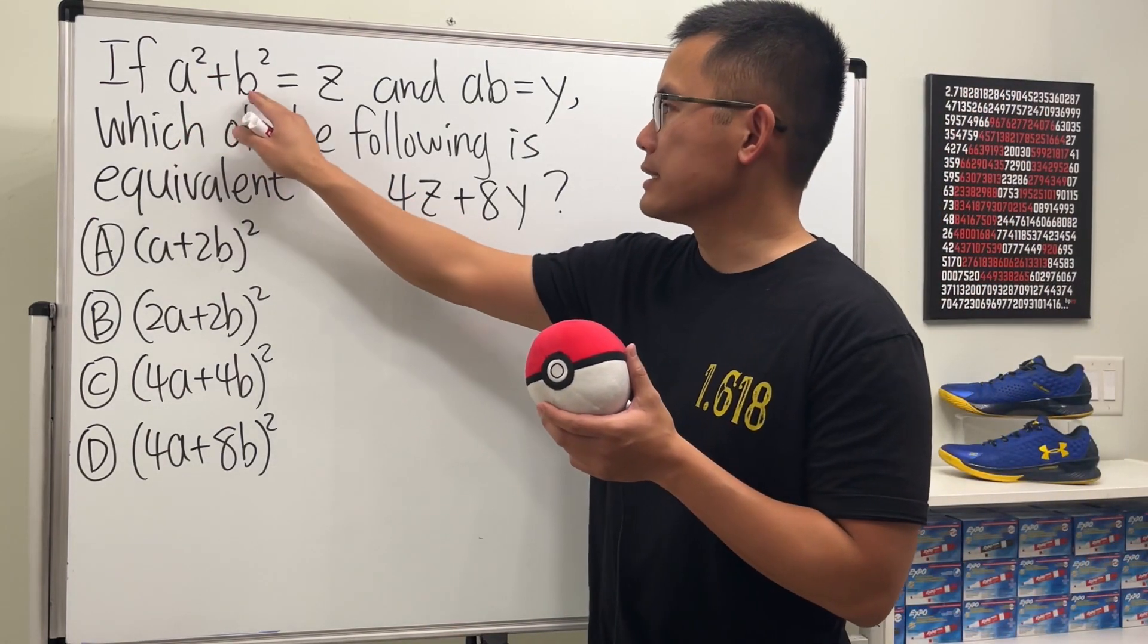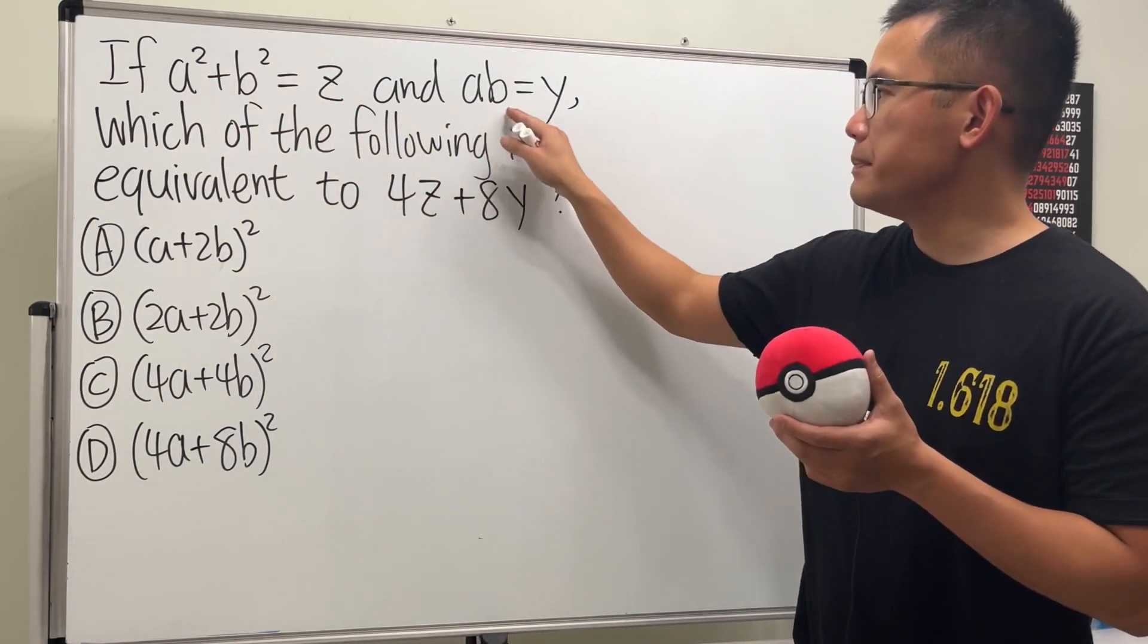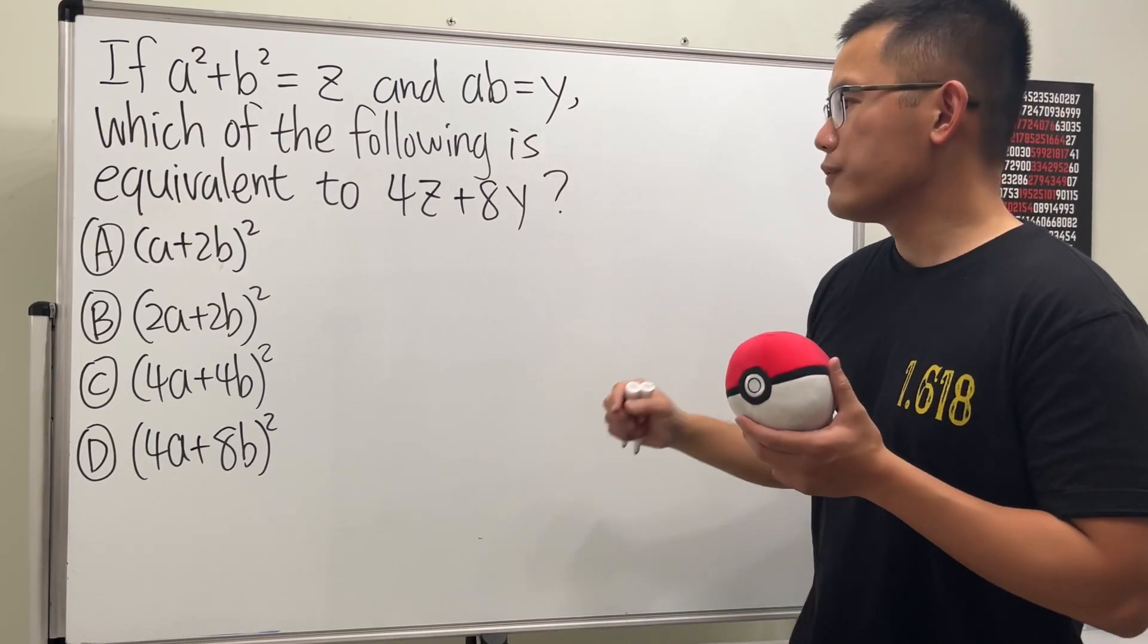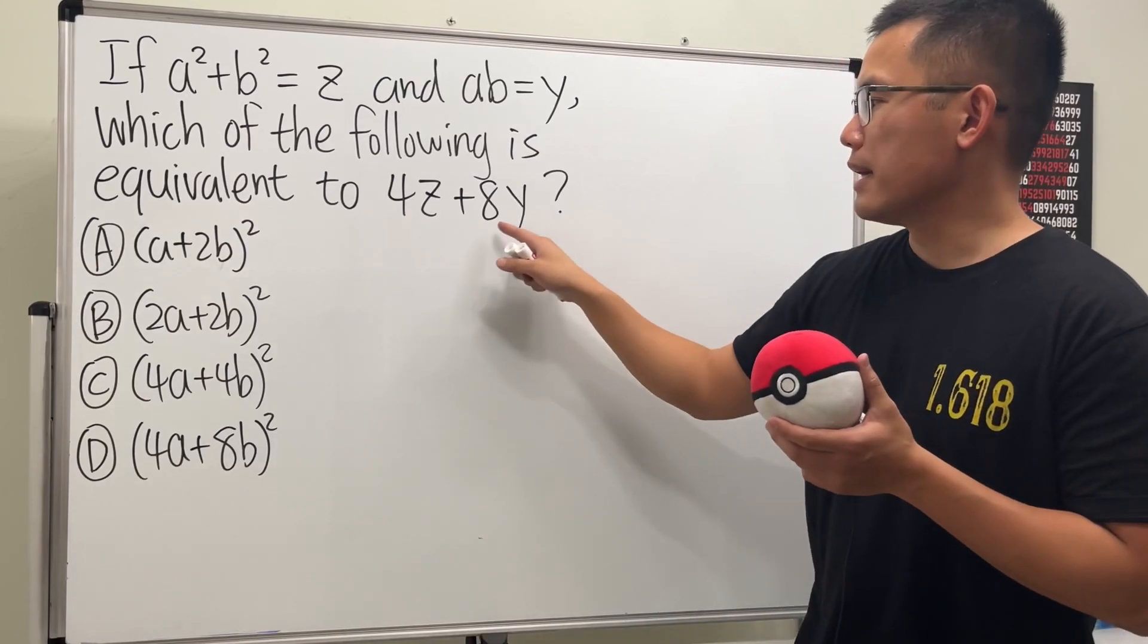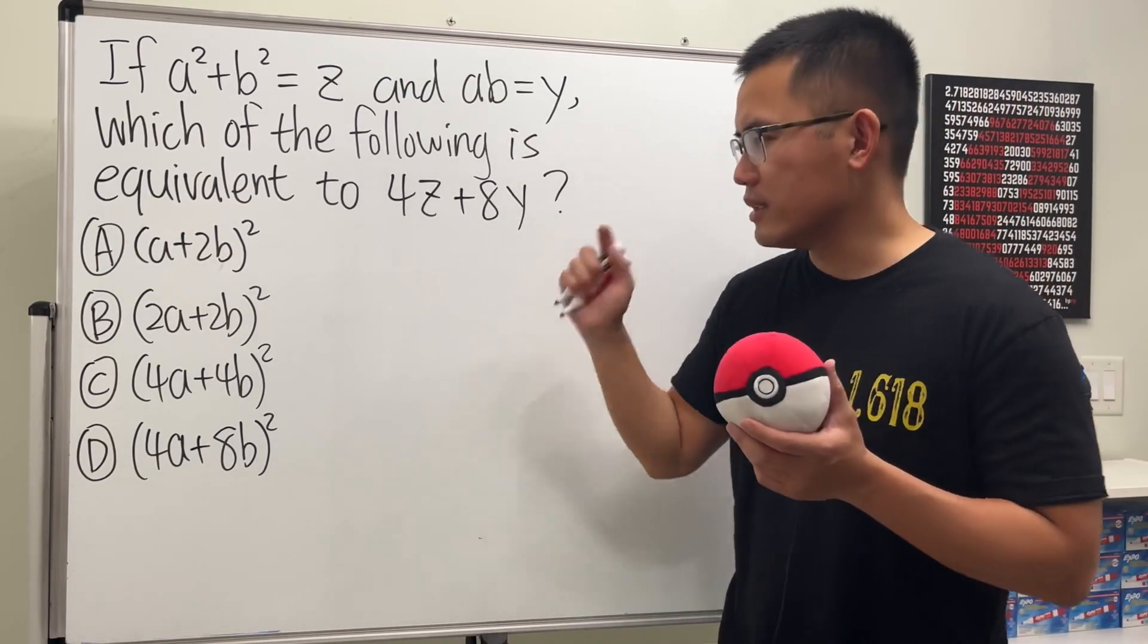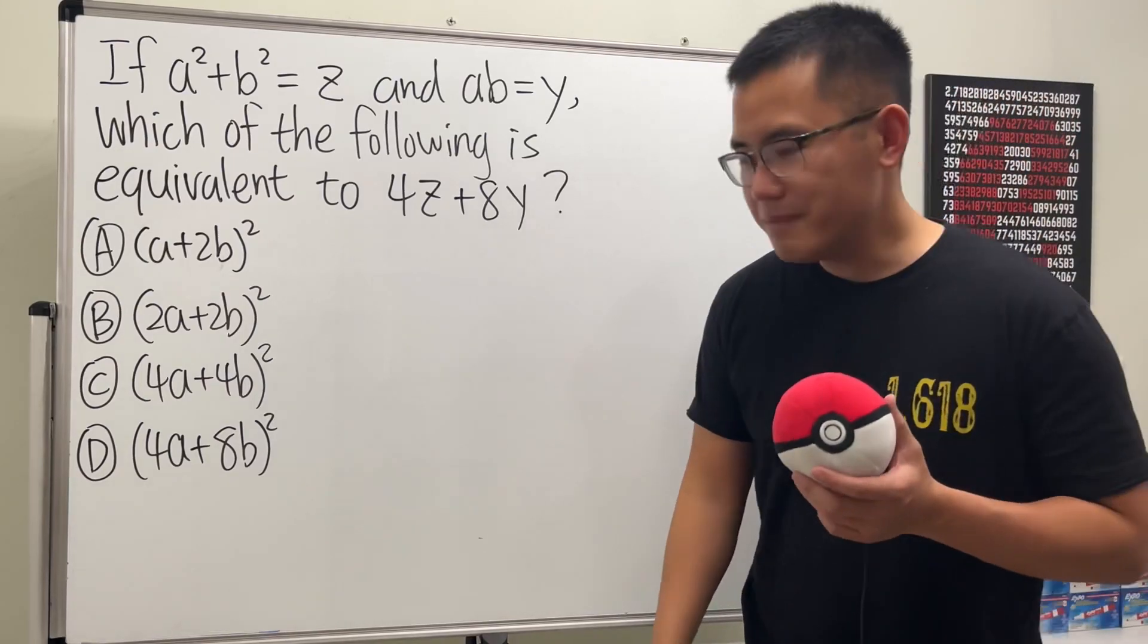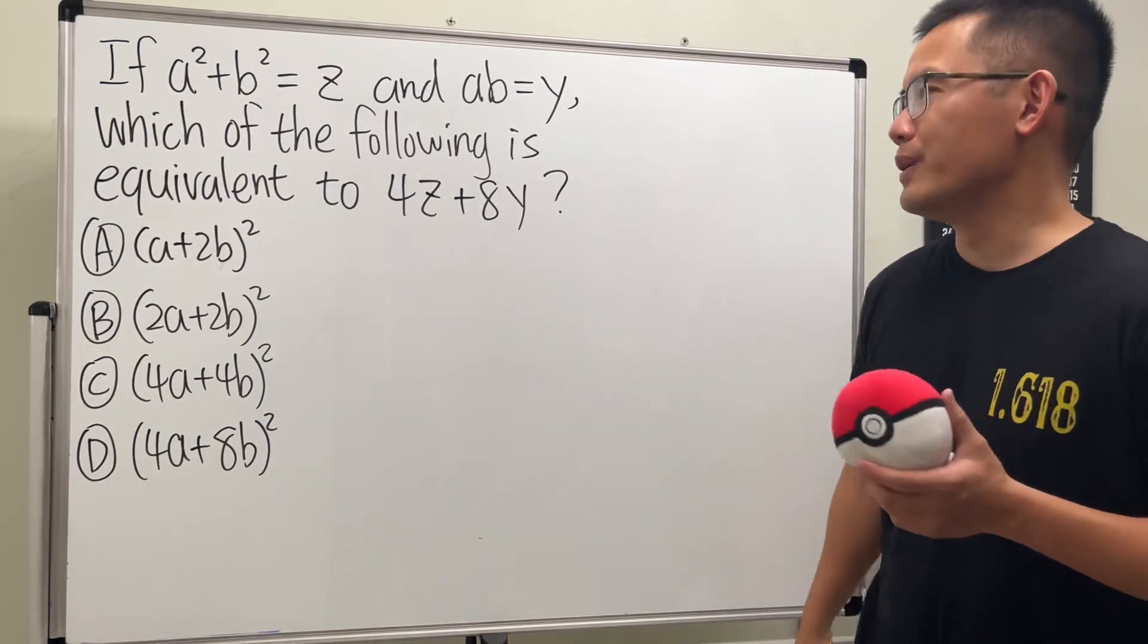If we have a squared plus b squared is equal to z, and a times b is equal to y, then we are going to find out which of these is equivalent to 4z plus 8y. And as always, please pause the video and try this first. You did? Good. So now let's see how we can do this.